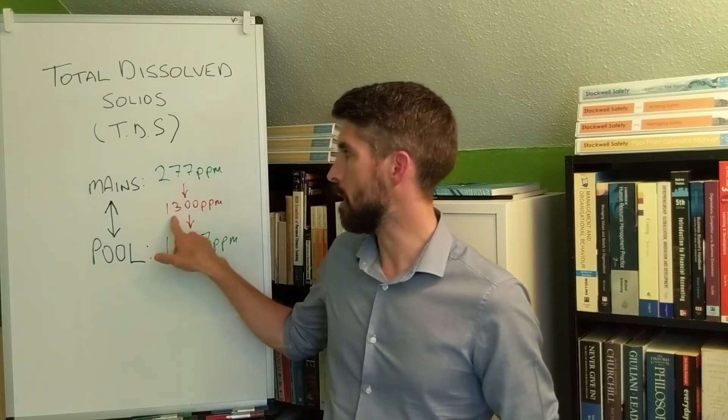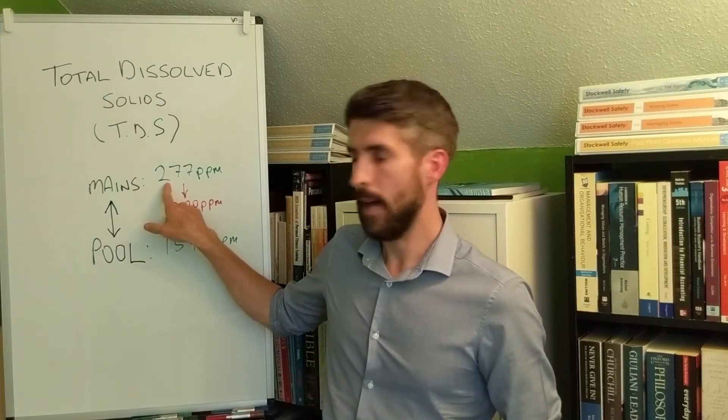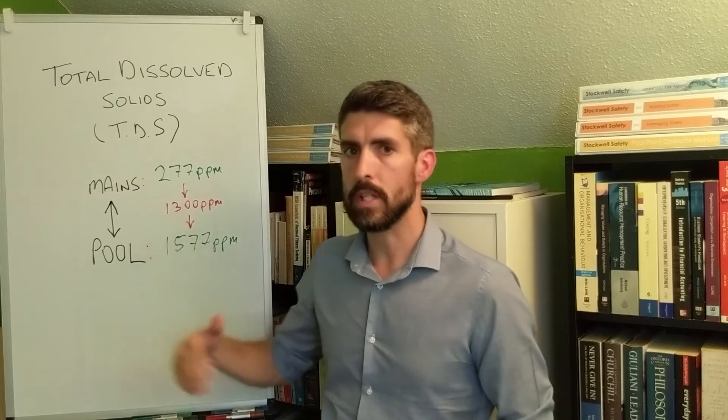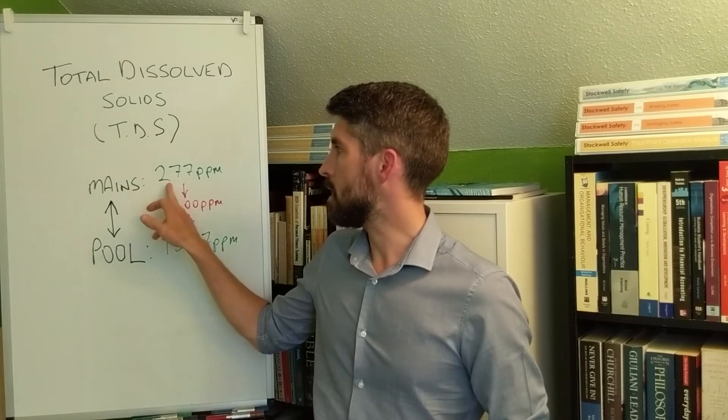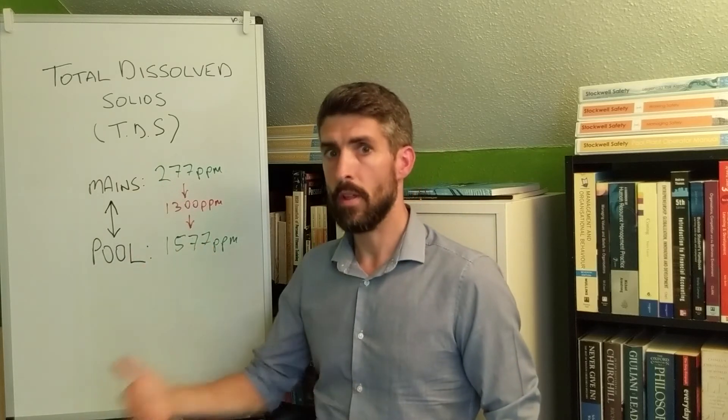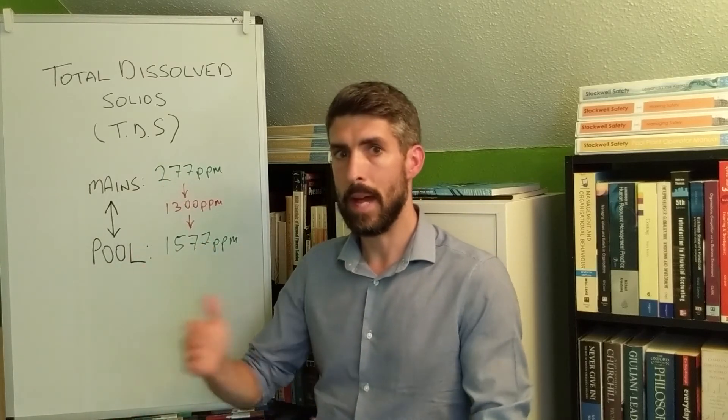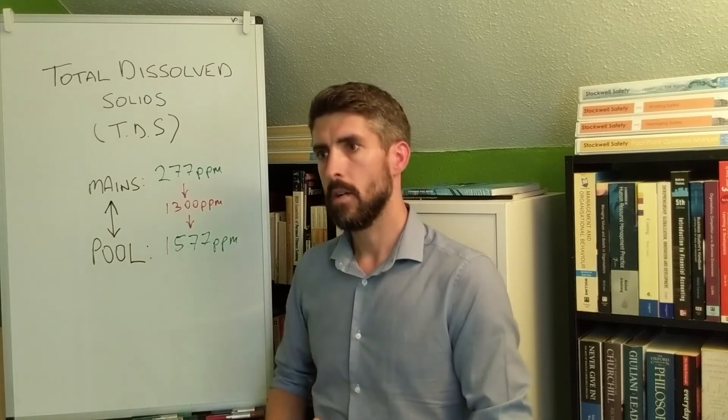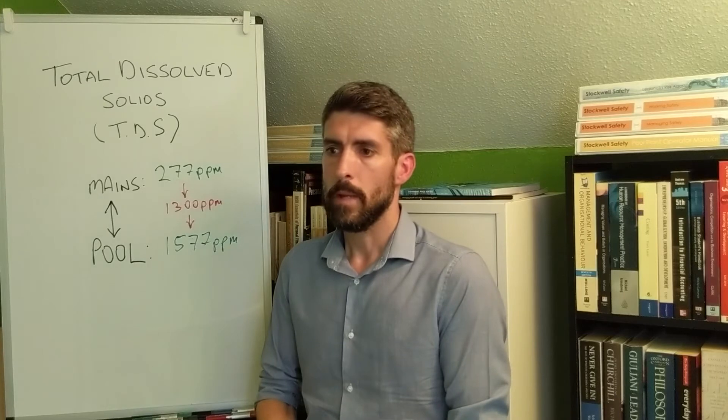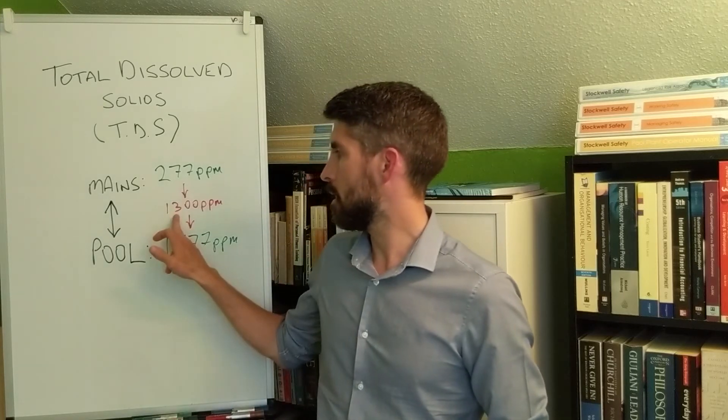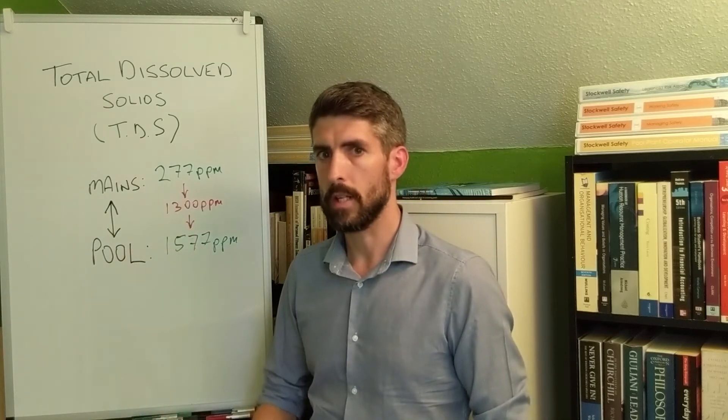So the industry standard here is to try and keep this difference between the mains water and the pool water lower than 1000. Whatever your mains TDS is, add on 1000 to that and that is your upper limit. Try and get it as low as you can though, because the higher that gets, the worse your pool water quality is going to be.